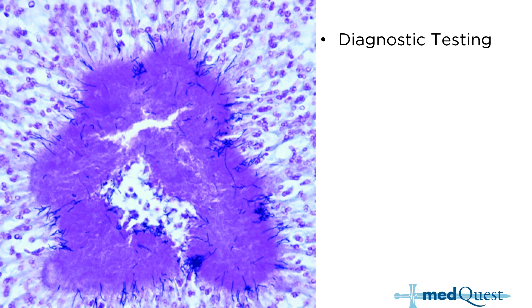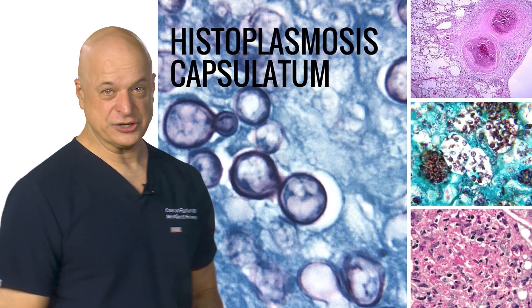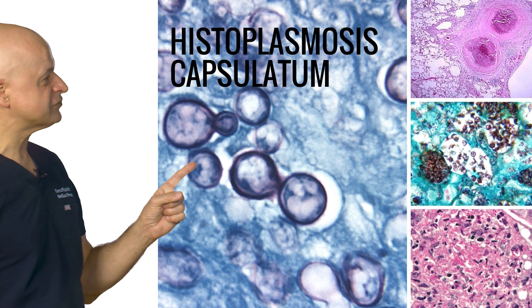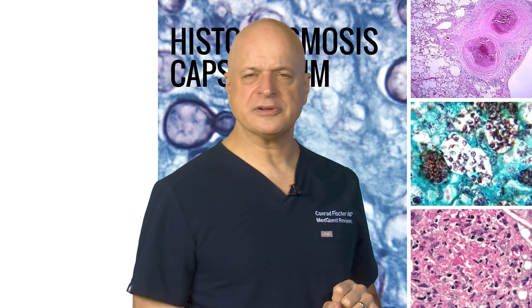Actinomyces can be part of normal flora and can be in immunocompetent people. It's also a filamentous gram-positive organism, but the difference is you're not going to die from it. It's rarely fatal, and you treat it with good old-fashioned penicillin. You're not going to miss the sulfur granules — it's going to be easy. Now, look at this beautiful stain with the green aquamarine background.